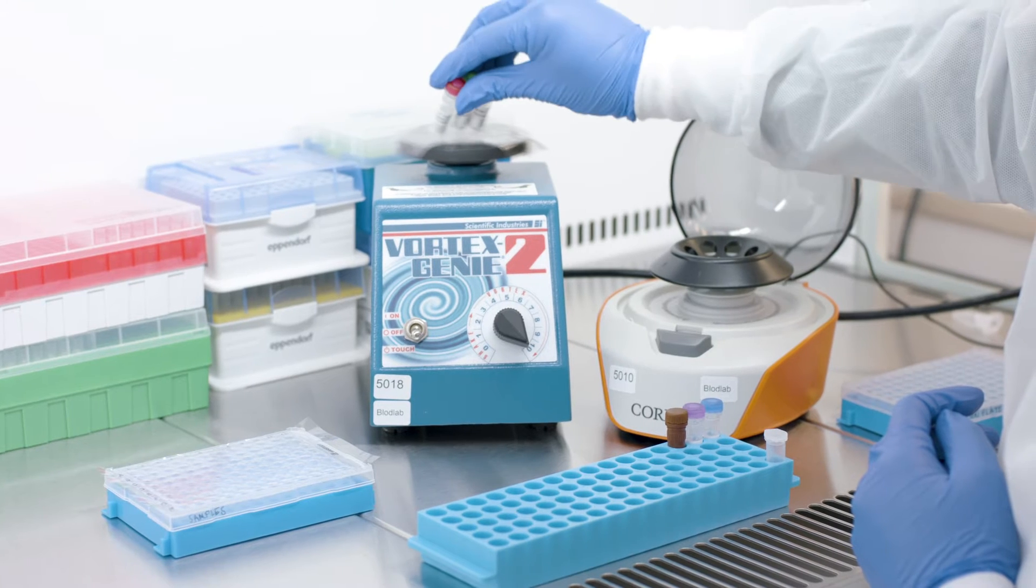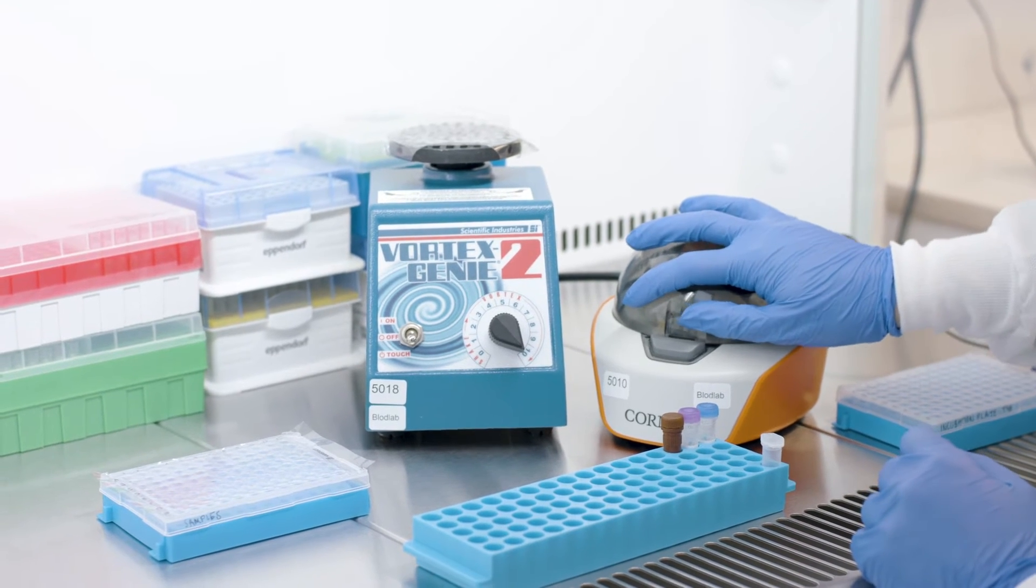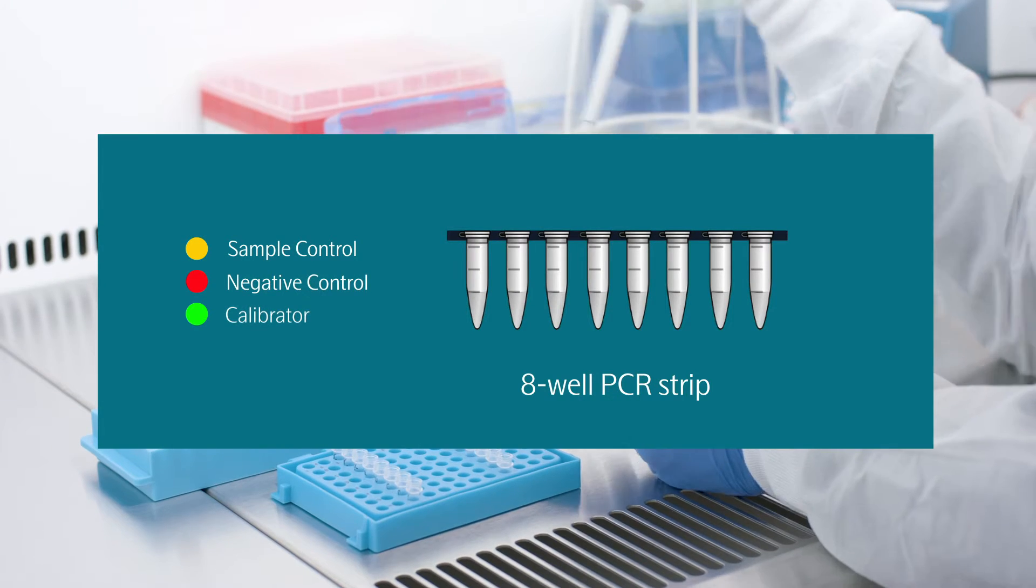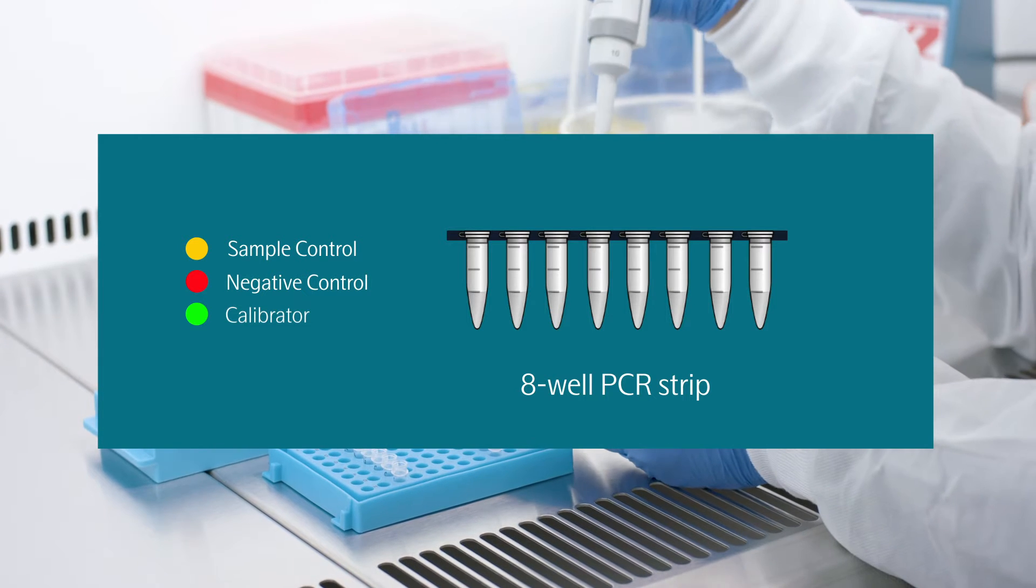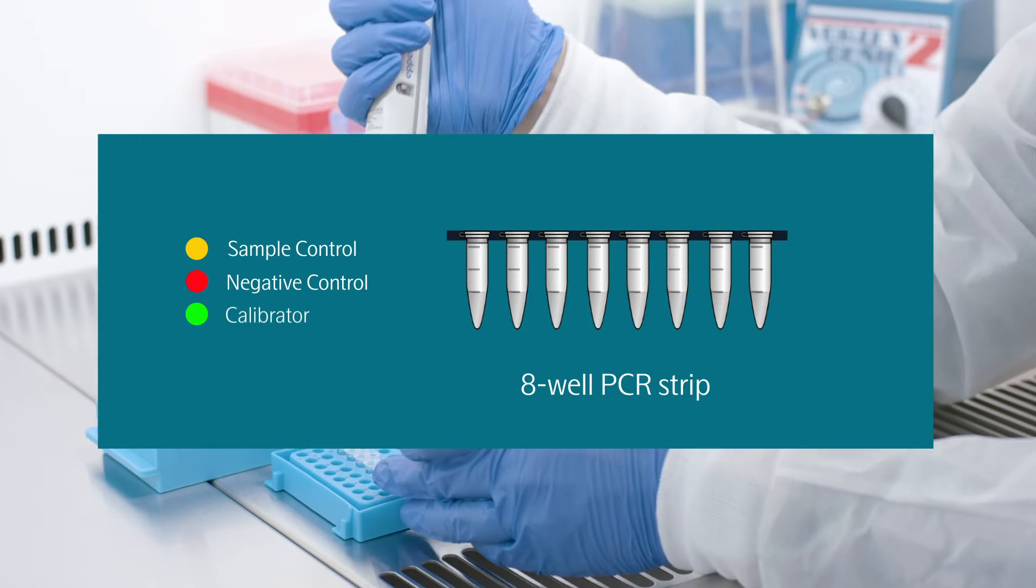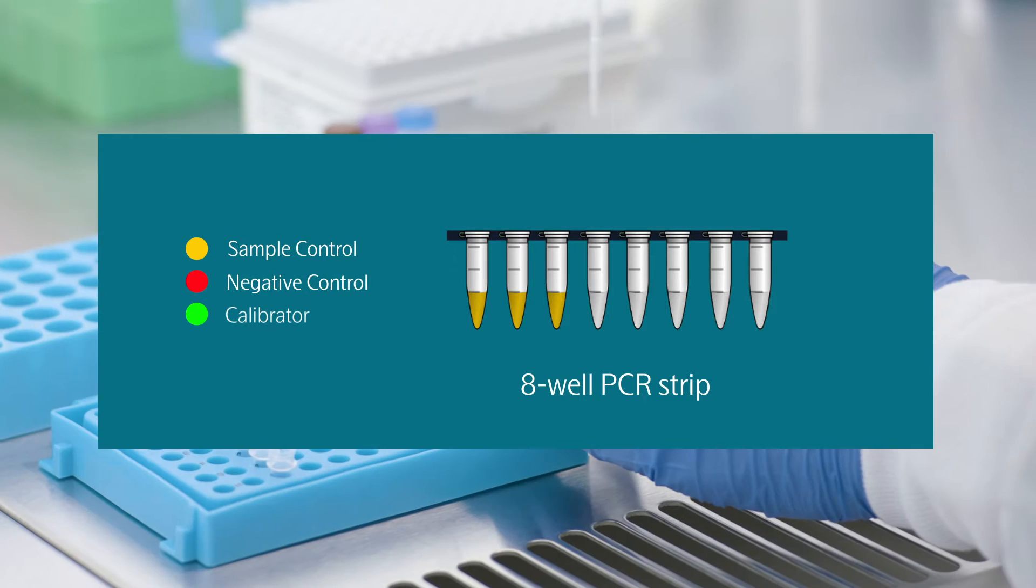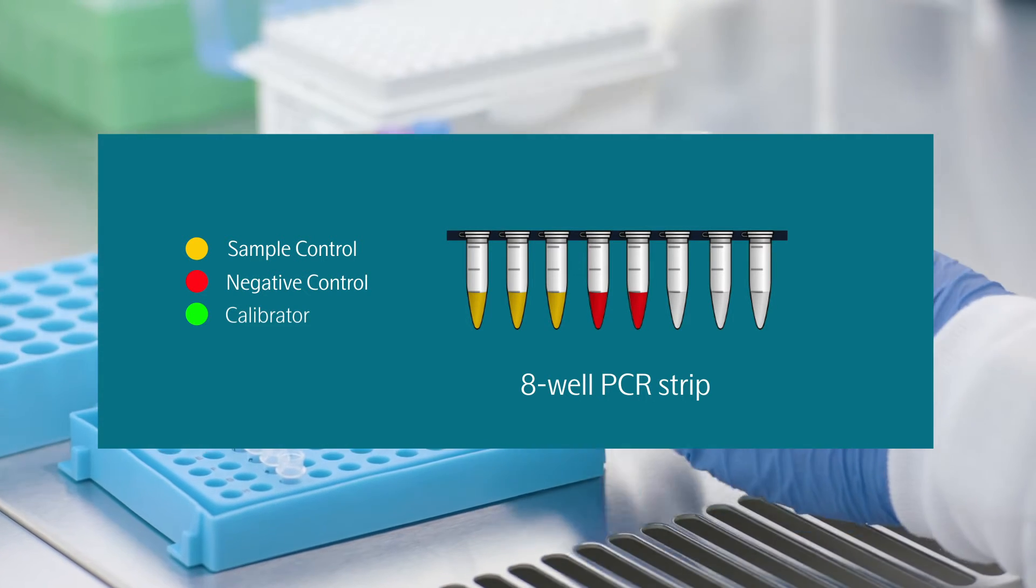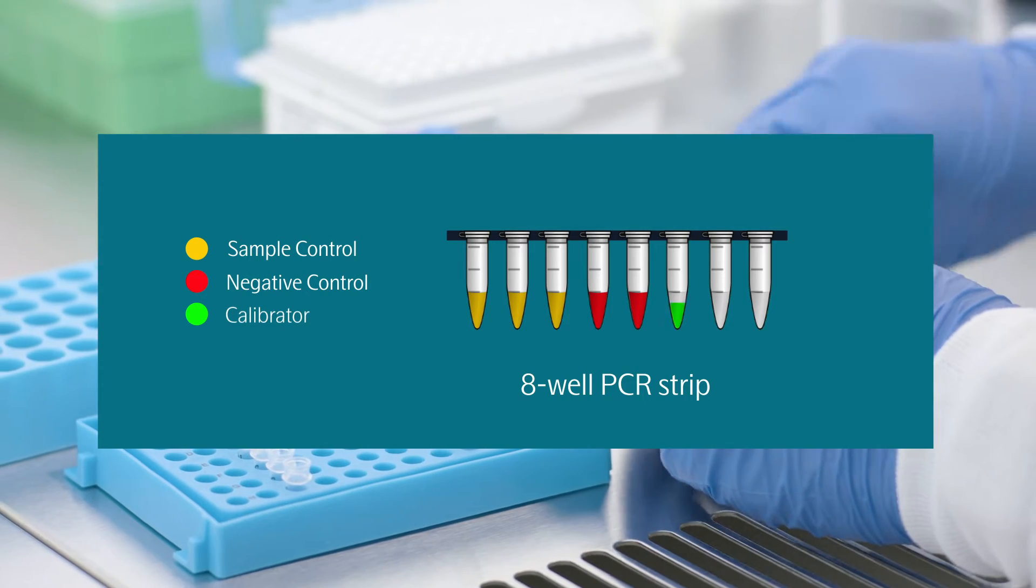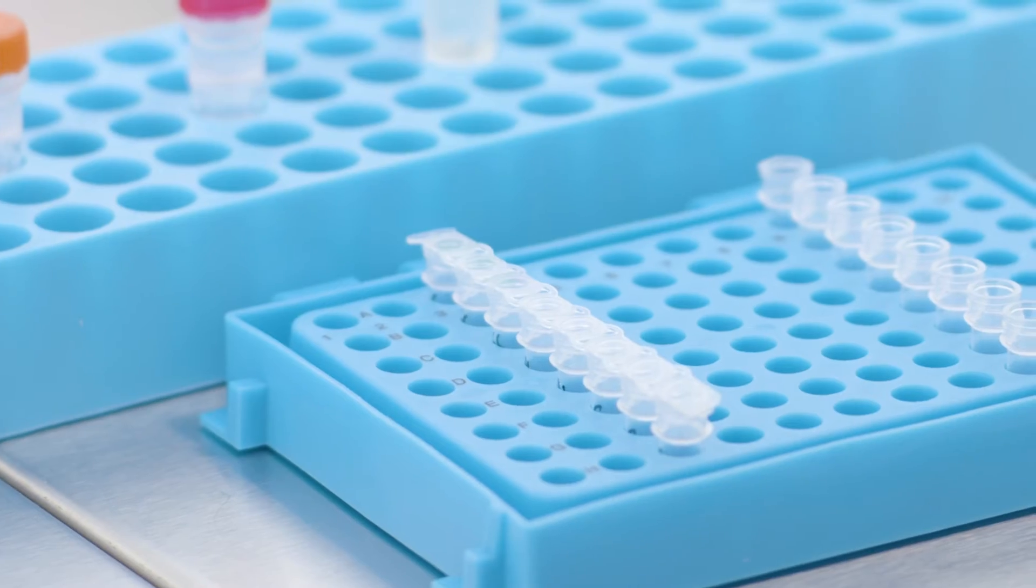Vortex the negative control, the sample control, and the calibrator, and spin them down briefly. Label an eight-well PCR strip with these controls according to the following order. Pipette four microliters of the sample control into the first three wells, four microliters of the negative control into each of the next two wells, and four microliters of the calibrator into the final three wells of the PCR strip. Cover the strip tubes and set that aside.